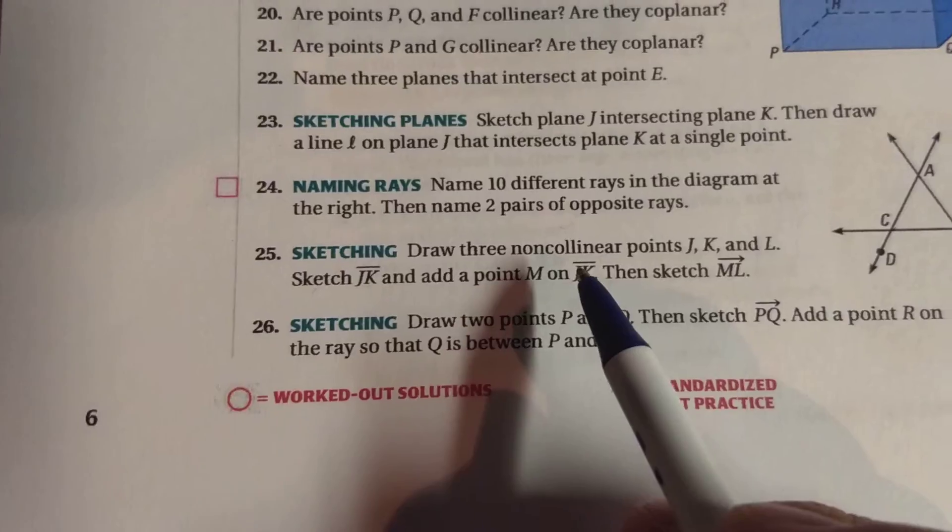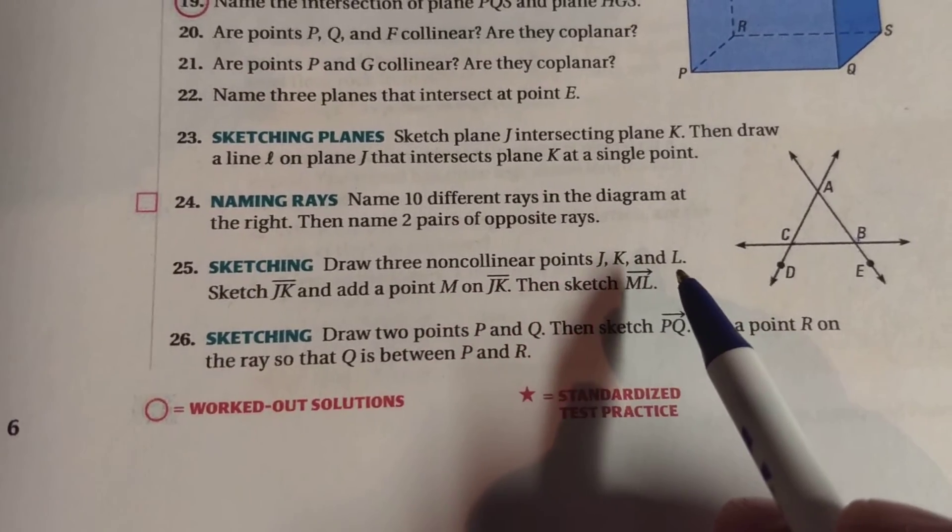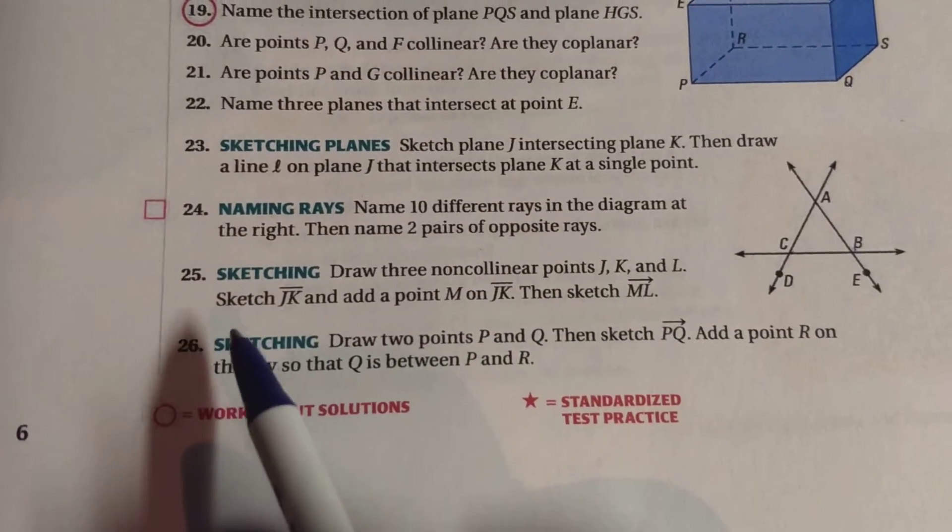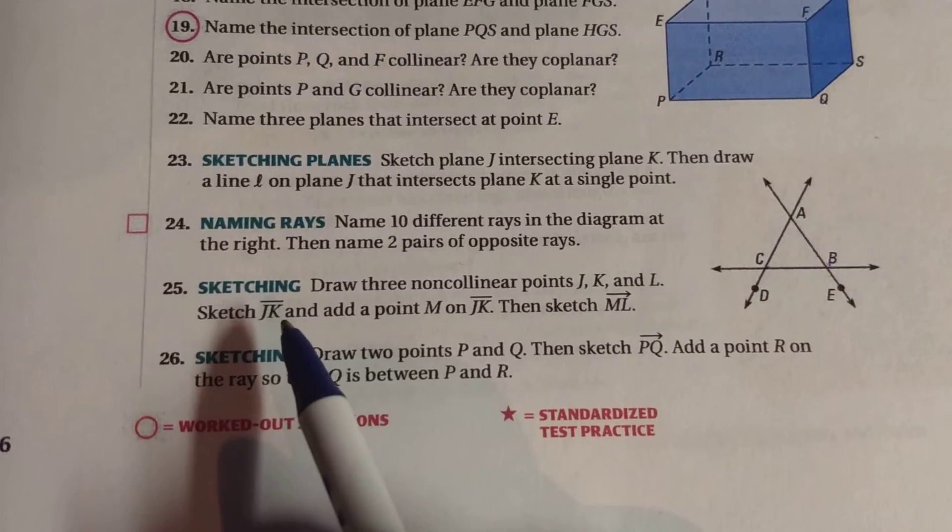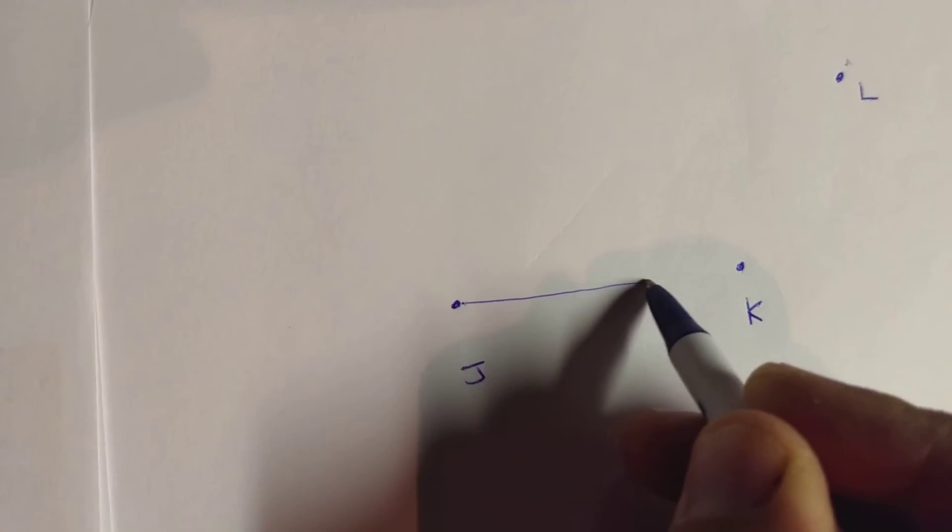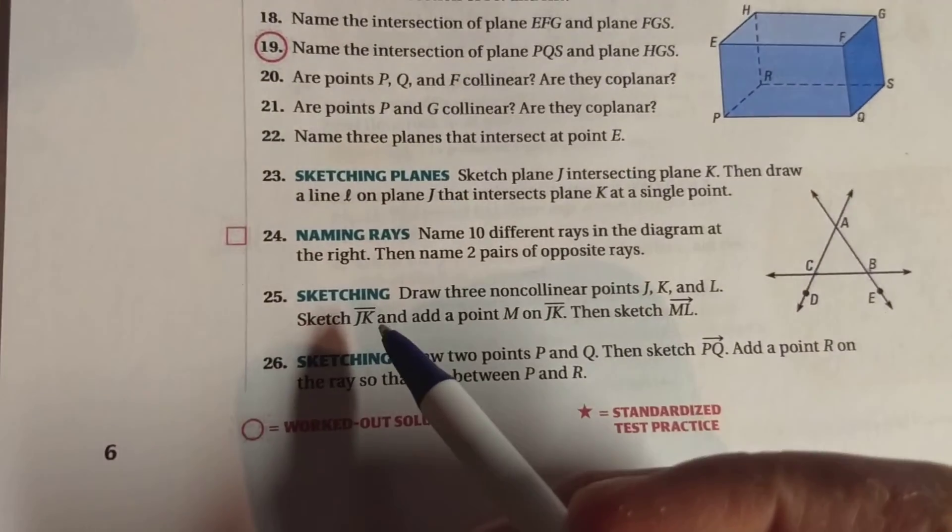Okay, so we did the first part. Draw three non-collinear points J, K, and L. Done. Now we're going to sketch line segment JK. Well, we've got to find J and K. Normally I'd get my ruler out to make this nice and straight, but I'm just sketching it. So there's line segment JK. We just did that.